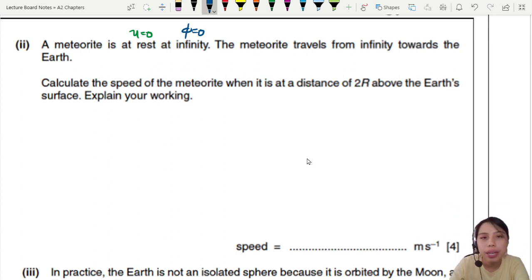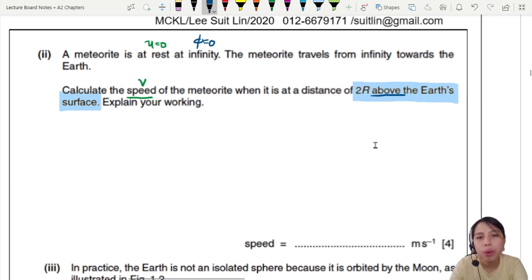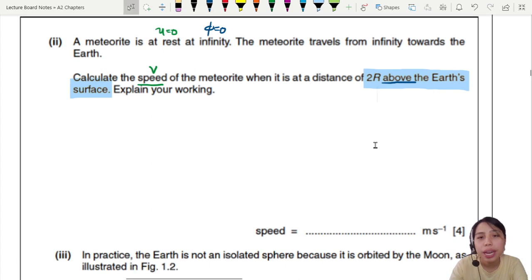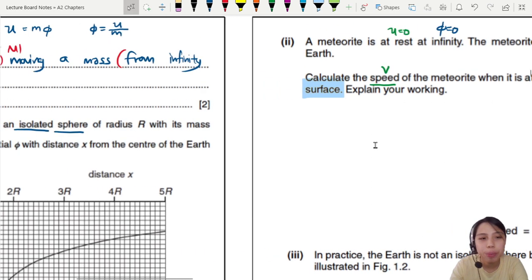The meteorite then travels from very far away towards the Earth. Is it going to collide? Maybe. Calculate the speed of the meteorite when it is at a distance. So after you travel a certain distance, you reach distance of 2R above the Earth's surface. Hey, this is a bit of a trap here. Above the Earth's surface, explain your working. Okay, how do we, what is happening here?